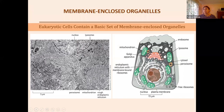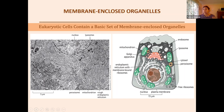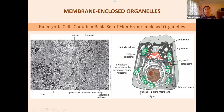Not only that, internal membranes also allowed these organelles to become specialized — just like a multicellular organism has specialized systems inside our body to perform particular tasks. Having these internal membranes allowed them to become specialized to have a particular task they can perform. When looking at our endomembrane system or membrane-enclosed organelles in general...